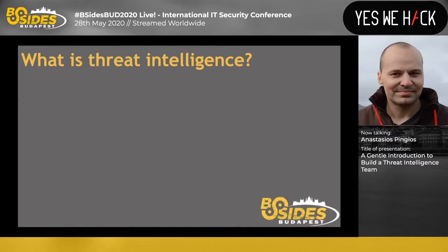So, what is threat intelligence? The easiest way is to split the two words into their parts — threat and intelligence — and define them with the best industry standard terms we have today. Starting with threat: it is very vague but has a simple definition. A threat is ultimately a person, and you typically hear that referred to as an actor or a group — a threat actor or a threat group.